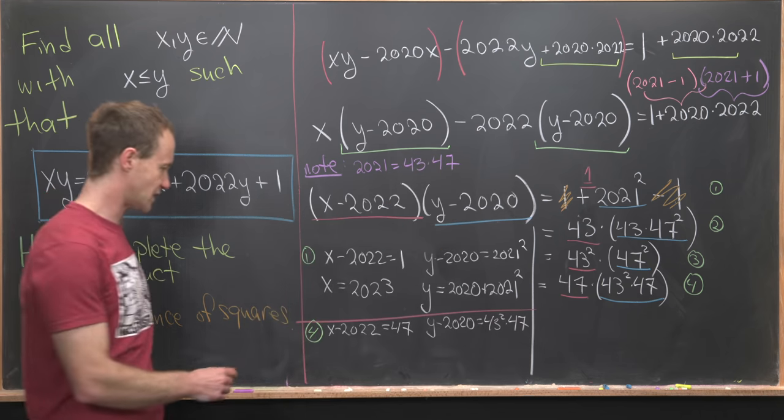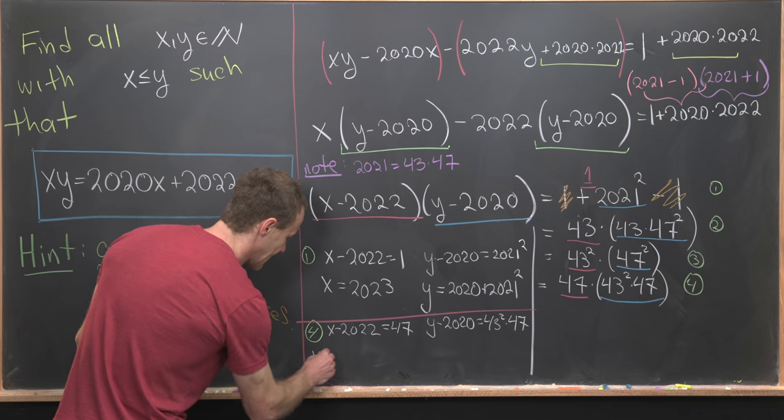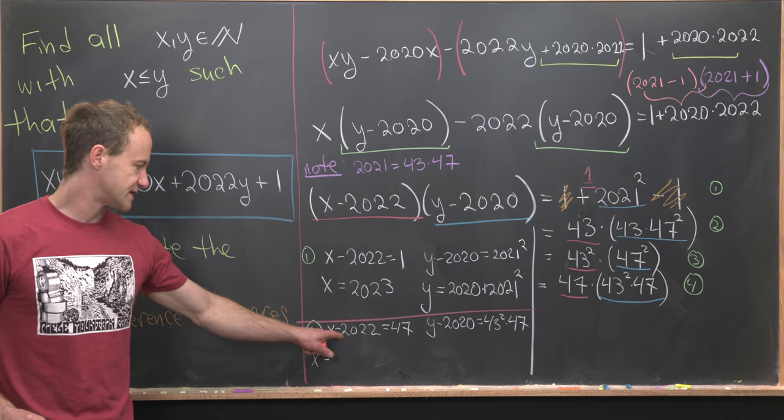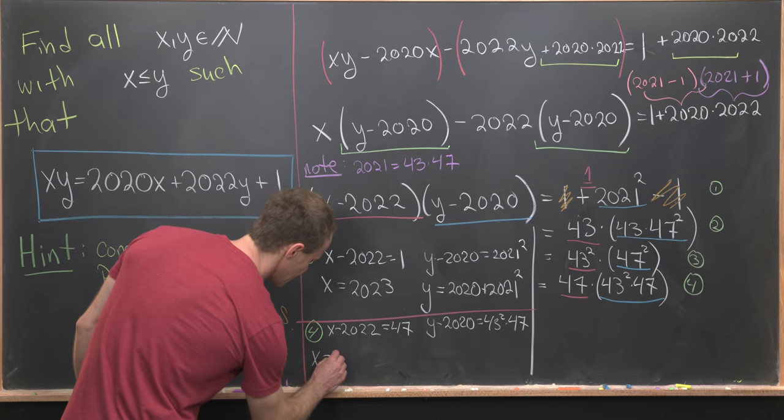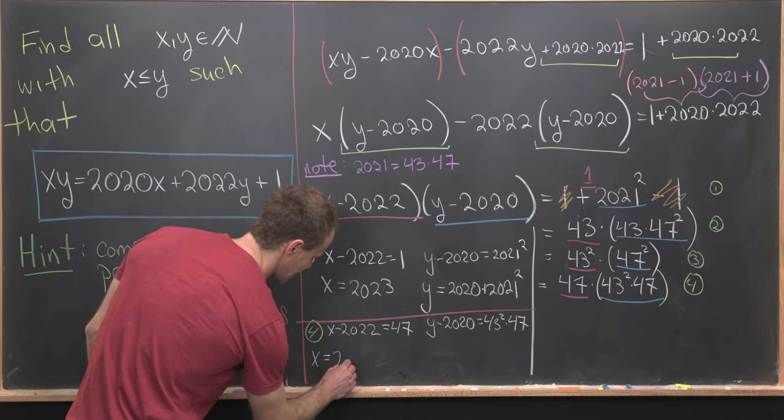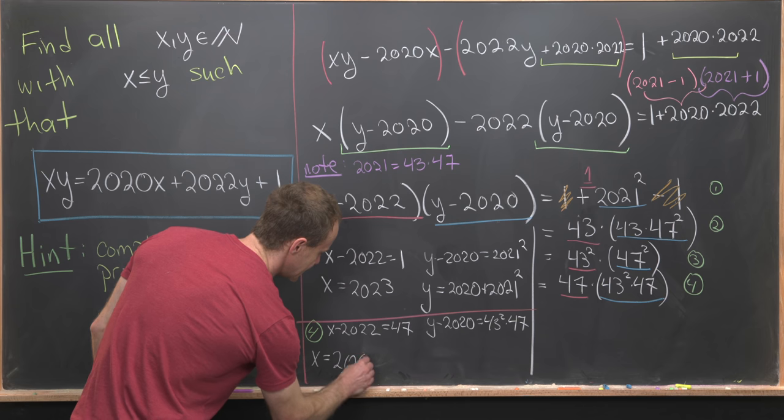So we can obviously solve that for x and y. We get x equals, well, it's going to be 2022 + 47. So let's see if I can do this without a mistake. That's 2069.